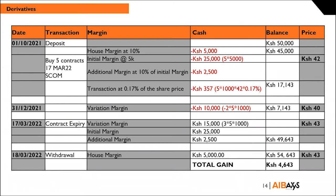Someone is asking what happens if the price dips to 30. That's why we have these mechanisms — the initial margin, house margin, and additional margin. As the price goes against the client, it would first deplete the margin left in the account through variation margin, and after that there would be a margin call. The client would be required to top up the account. If the client is unable to top up, we retain the right to close out the position.